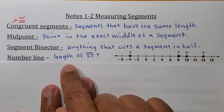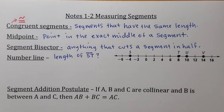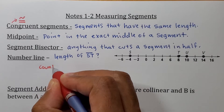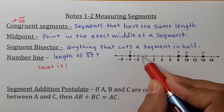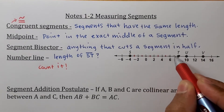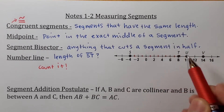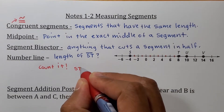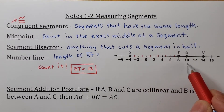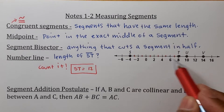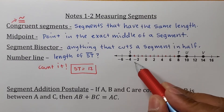For this number line example, we're being asked to find the length of ST. To find the length of ST, all you have to do is count. We're going from negative four to negative two, going by twos. Counting: one, two, three, four, five, six, seven, eight, nine, ten, eleven, twelve — so the length of segment ST is 12 units. Don't get confused by the negatives: length is always positive. We're talking about distance, so don't focus on the negative signs.